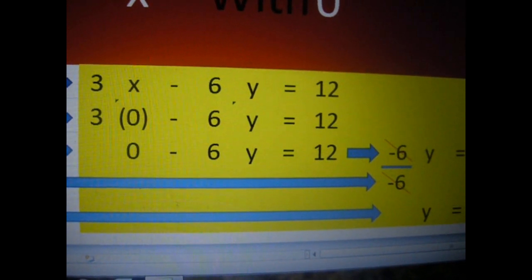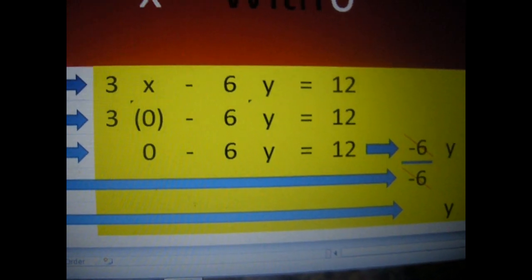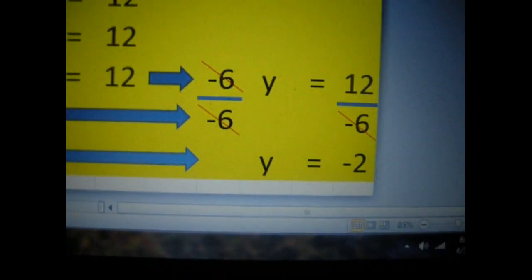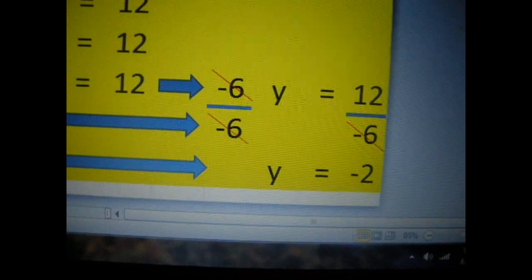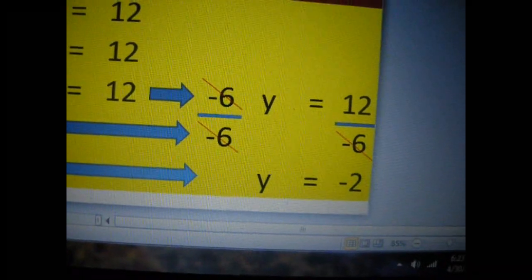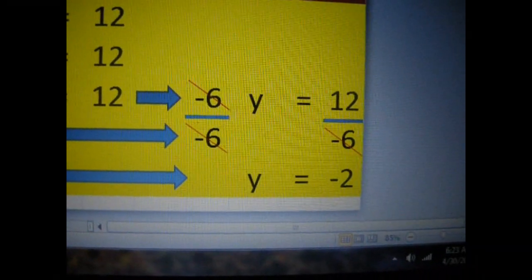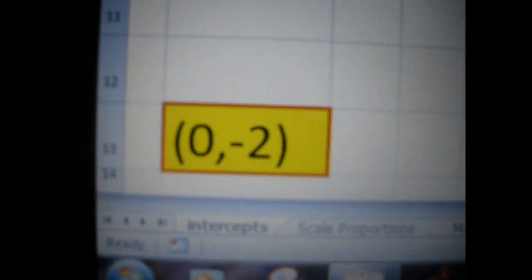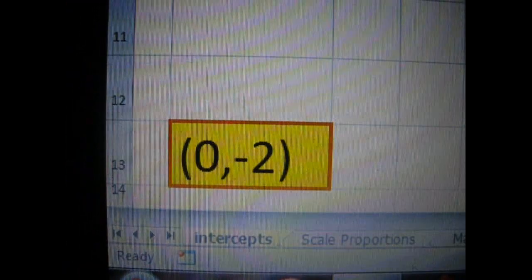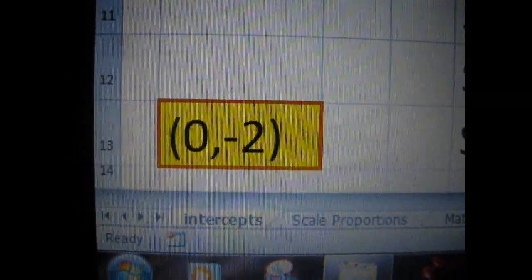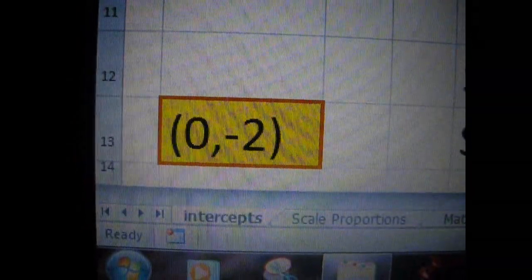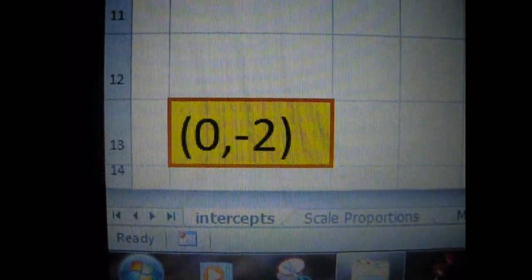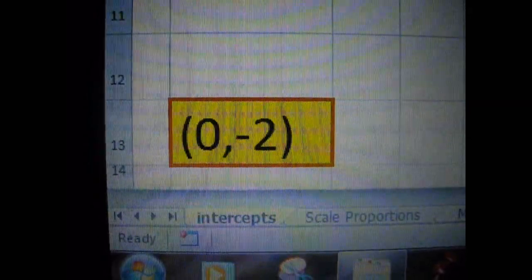So the result, to find Y and substituting X with 0, it will be Y equals negative 2. It brings it over here, and this actually shows you the intercept coordinate. X always comes before Y, so it's 0 is X, comma, negative 2 is Y.